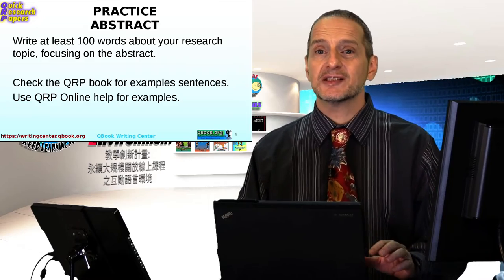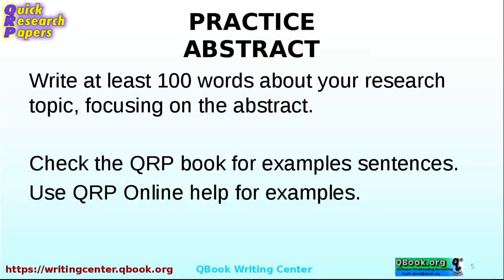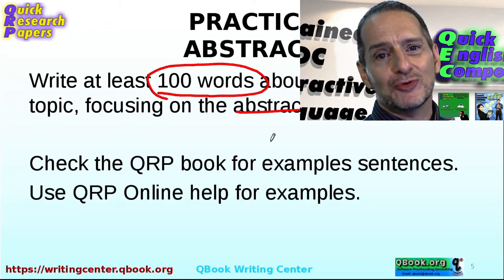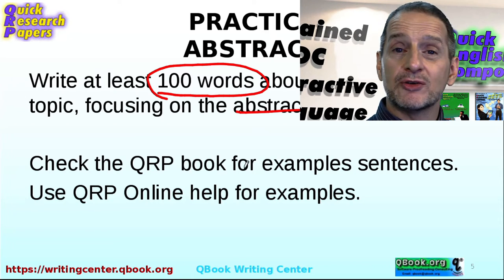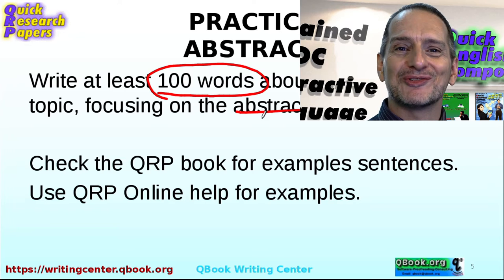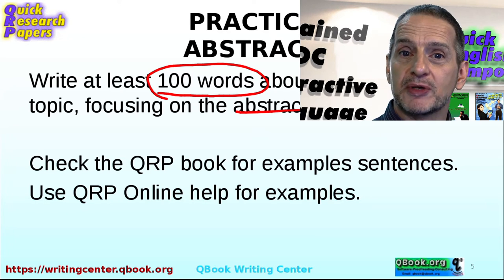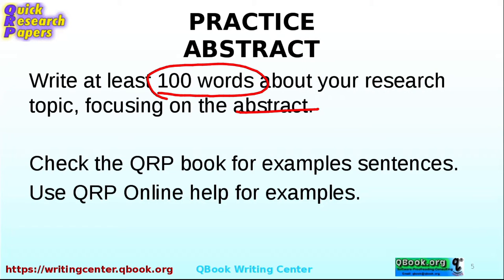All right, now let's do a practice, and this practice is the abstract. I'm going to ask you to use the QRP online writing system and write 100 words focused on the abstract. If you have real research you can use it, and if you don't, maybe you can find an existing topic in Google Scholar and just make things up. There's not much else you can do. The point of this exercise is to practice writing a little bit. So, 100 words for the abstract.